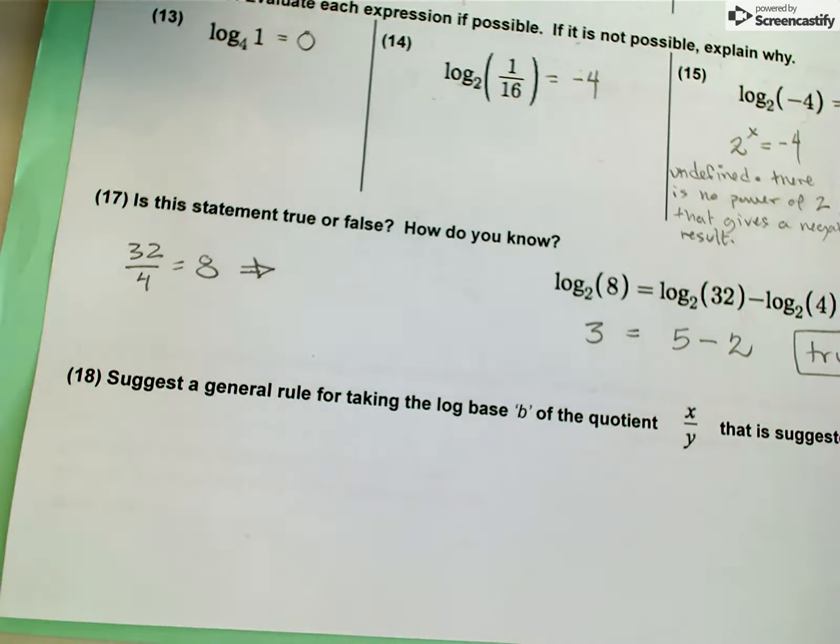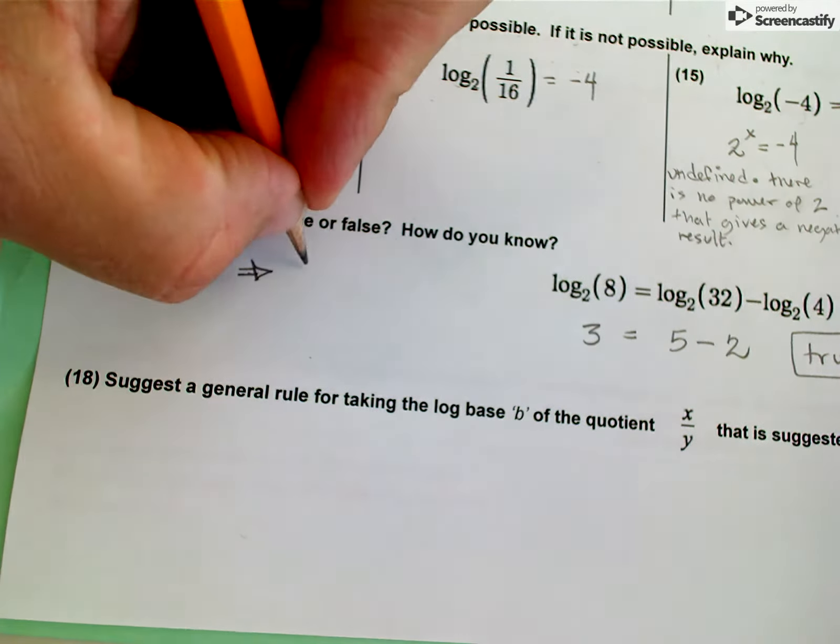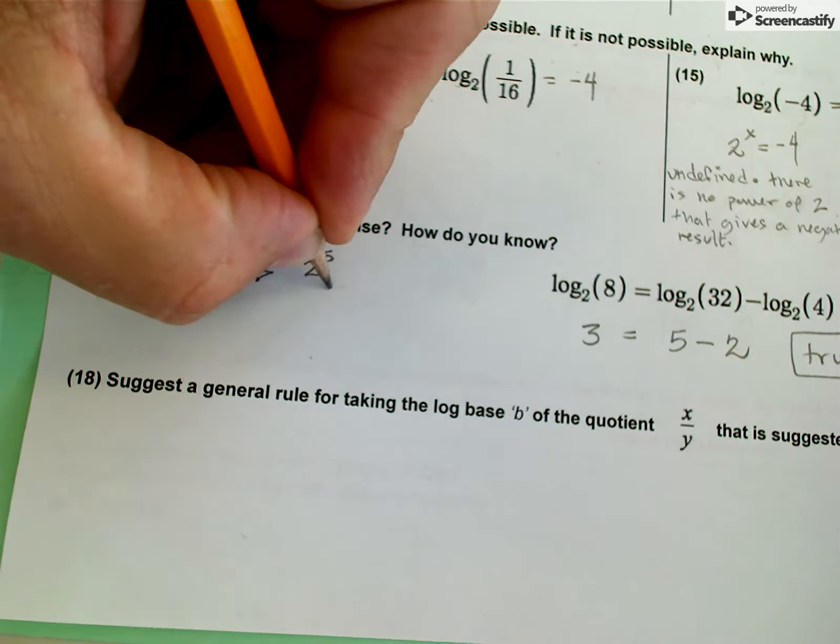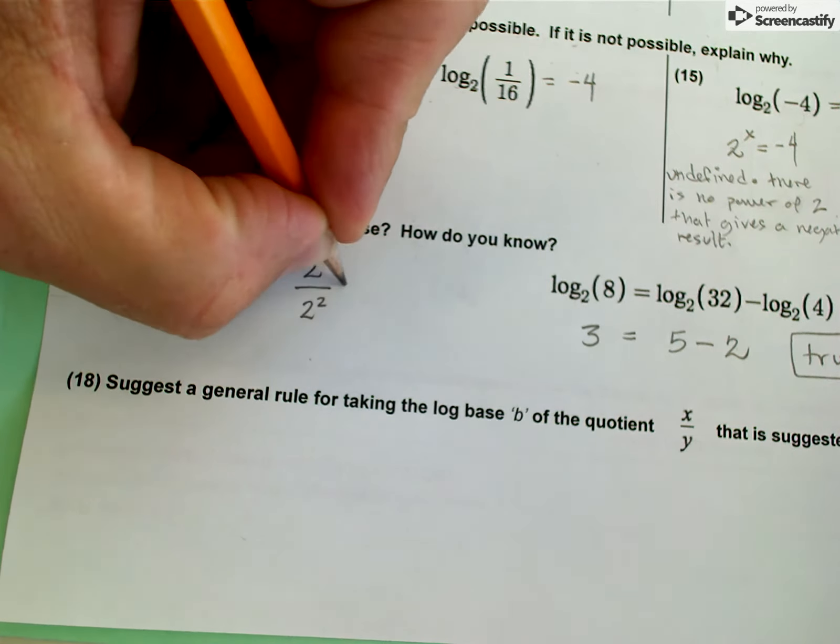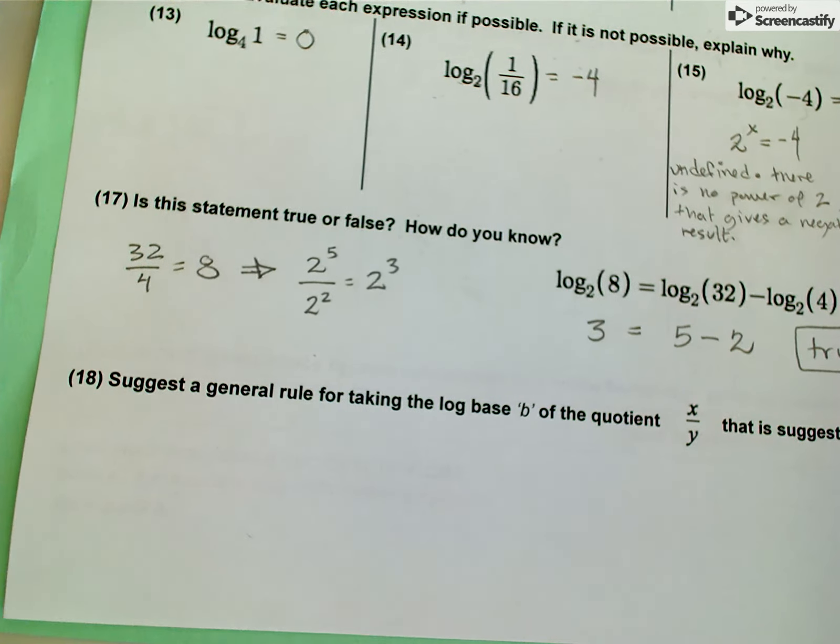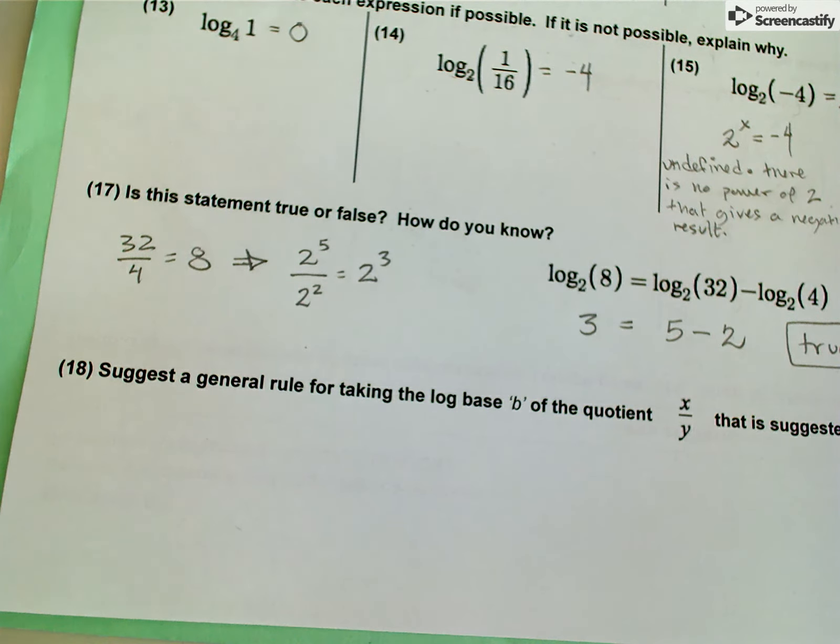Another way of thinking about that is in terms of the powers of 2: 2 to the fifth power divided by 2 to the second power equals 2 to the third power. So we have the quotient rule here.